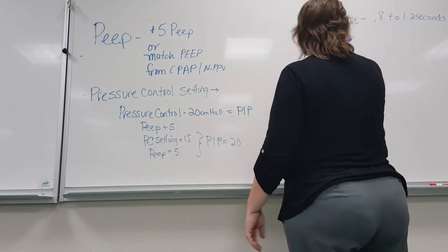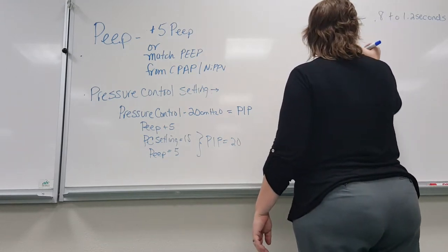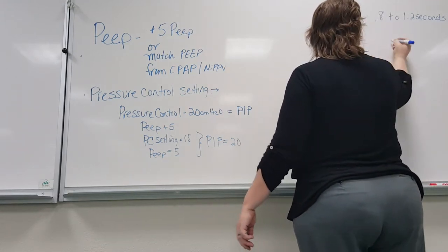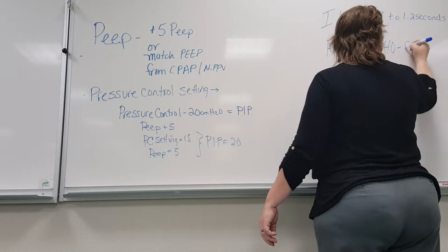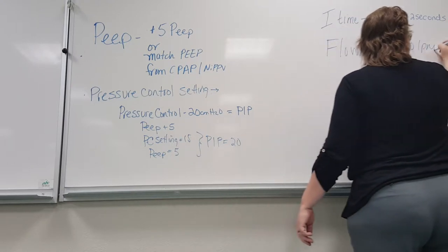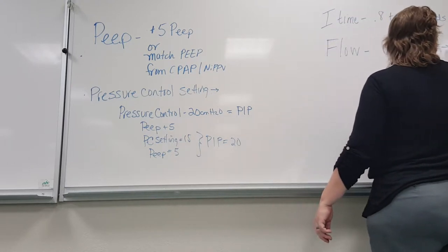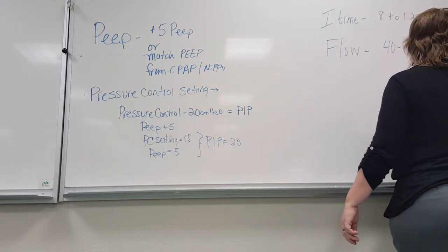We also have flow. The range is 40 to 80 liters per minute, but a very good starting point is 60.